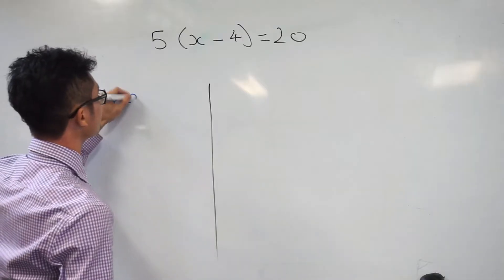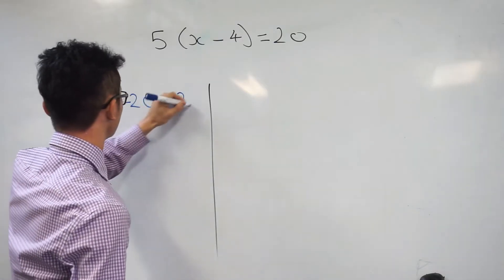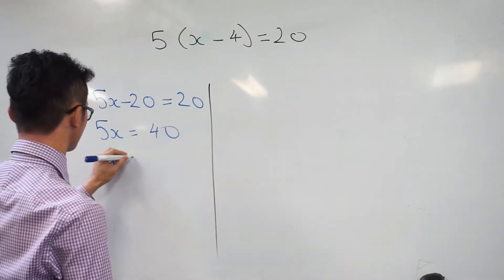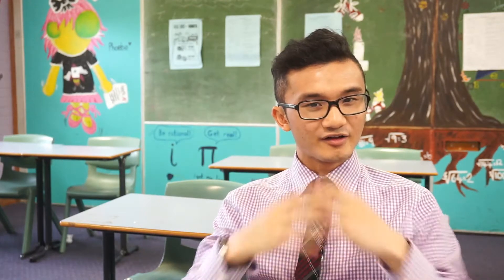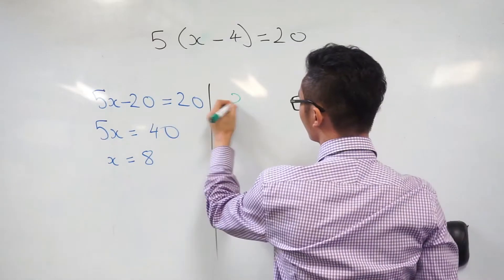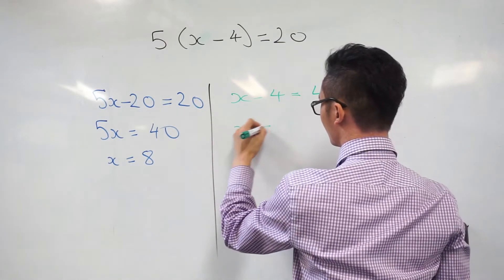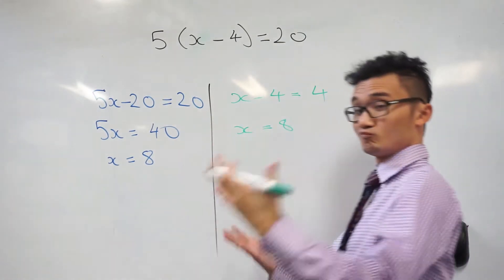I've got 5 outside of (x minus 4) equals 20. Remember, the goal is to always think about how to get that variable by itself, and thinking about opposite operations is key. One approach involves expanding that bracket out and then rearranging your equation to solve for x. Another way would be, rather than expanding, since those brackets represent multiplication, to divide both sides by 5 — that's actually going to make the expression a lot easier and quicker to solve. It comes down to which methods you're more comfortable with, and that comes through practicing more problems.